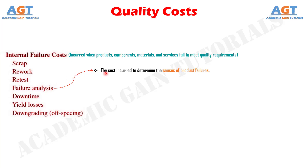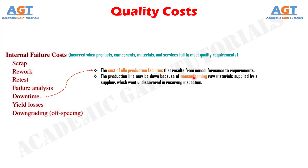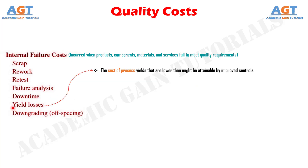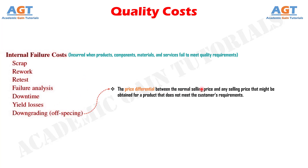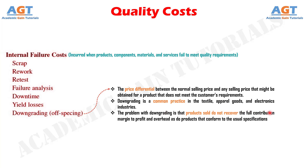Number 4, failure analysis — the cost incurred to determine the causes of product failures. Number 5, downtime — the cost of idle production facilities that results from non-conformance to requirements; for example, a production line that is down because of non-conforming raw materials from a supplier that went undiscovered in receiving inspection. Number 6, yield losses — the cost of process yields that are lower than attainable by improved controls, for example, soft drink containers that are overfilled due to excessive variability in the filling equipment. And number 7, downgrading or offgrading — the price differential between the normal selling price and any reduced selling price obtained for a product that does not meet customer requirements. Downgrading is a common practice in the textile, apparel goods, and electronics industries, as products sold do not recover the full contribution margin to profit and overhead.